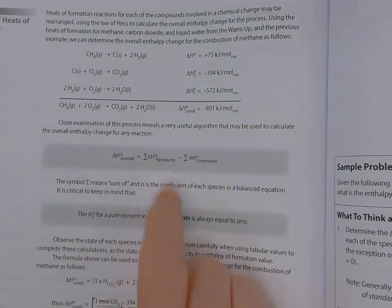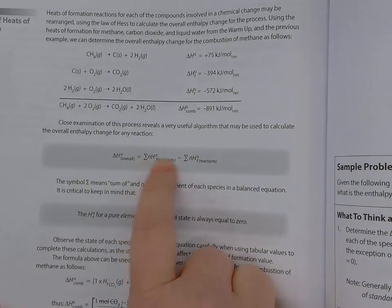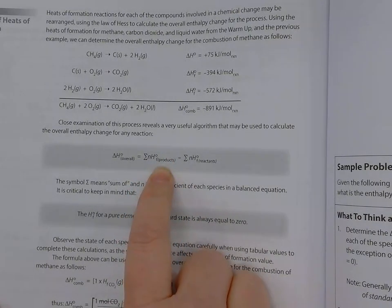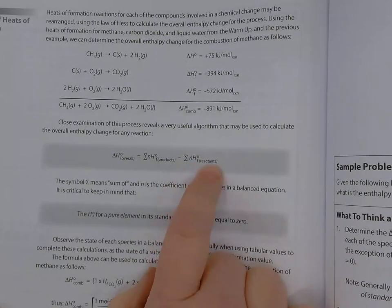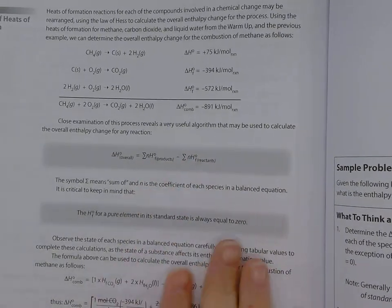We have our N, which is our coefficient of our chemical, times the delta H of our product minus the sum of N times the delta H of our reactants. So products minus reactants.